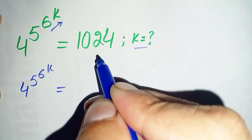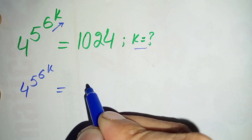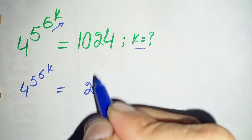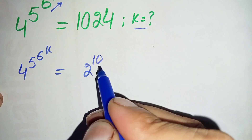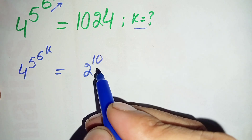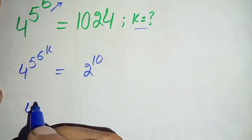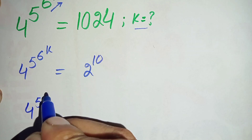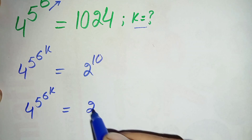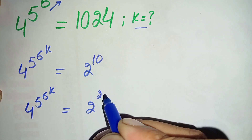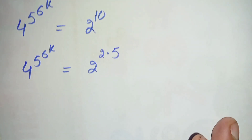On the right hand side, we will change 1024 to its exponential form. We can write 1024 as 2 raised to power 10. In the next step, we will factorize this power 10 as 2 times 5. So the right hand side becomes 2 raised to power 2 times 5.